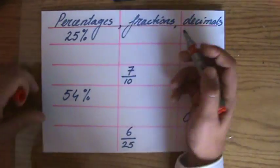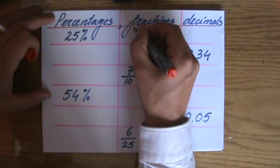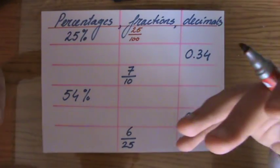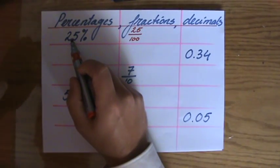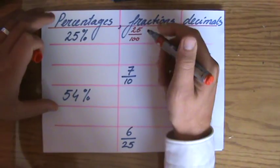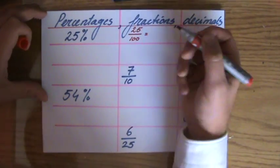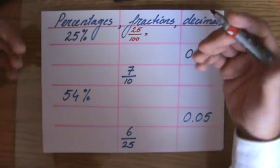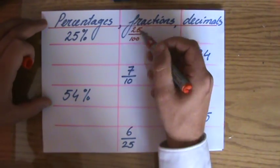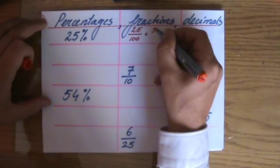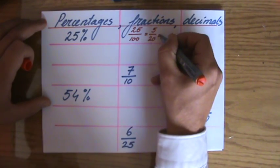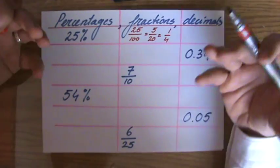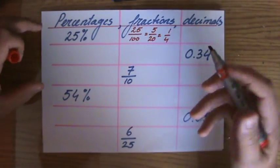25% as a fraction: that will be 25 out of a hundred, because that is exactly what a percentage means — 25 out of a hundred. Now, fractions we have to simplify. Maybe you don't see the simplest answer in one go, so do it step by step. You can divide both by 5: that gives 5 over 20. I can still divide that by 5: 1 over 4 — a quarter. 25% equals one quarter.